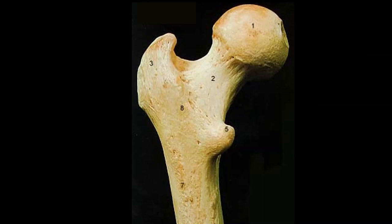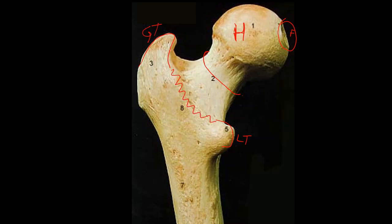We're seeing the proximal end of the femur here. I've got the head — very obvious — and the fovea capitis, the hole in the head. The neck would be in here. I see a greater trochanter, this large lump sticking up, and a lesser trochanter on the other side. In between I see an intertrochanteric line because I'm looking at the back of the bone.